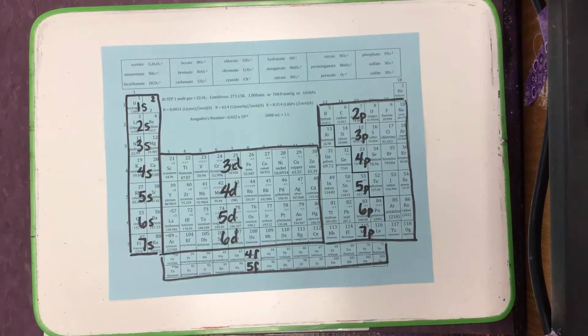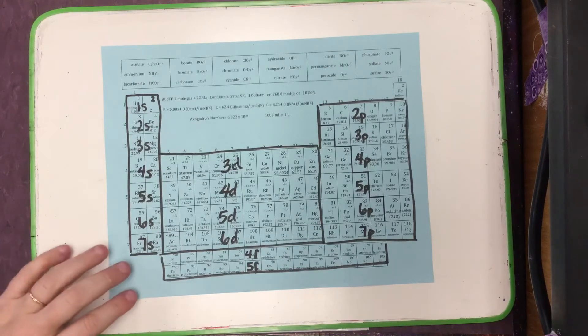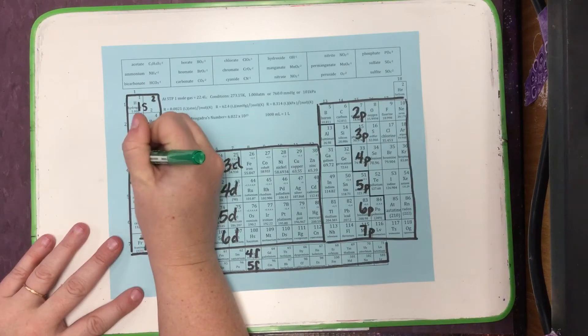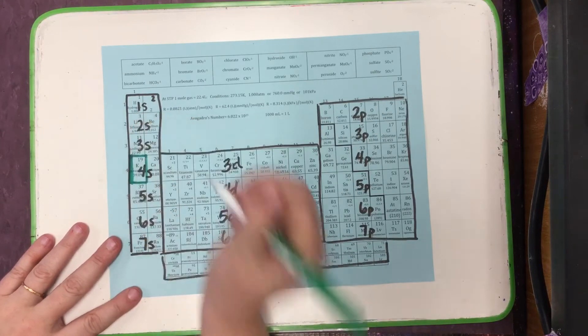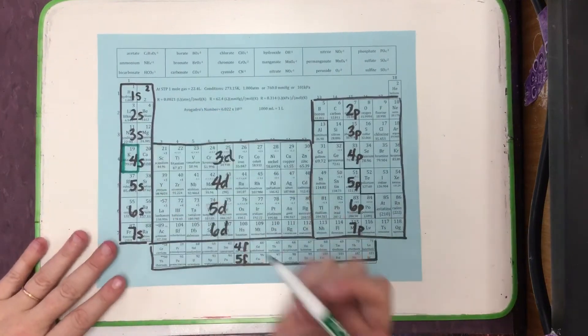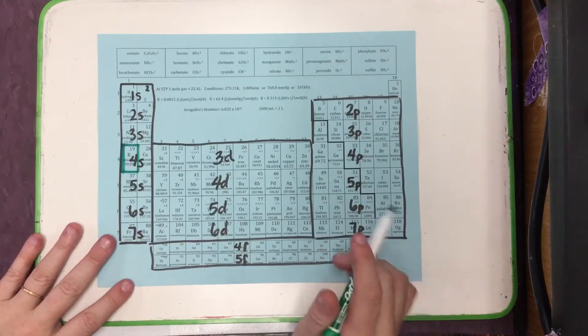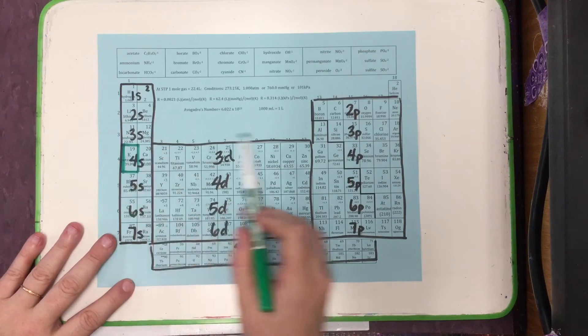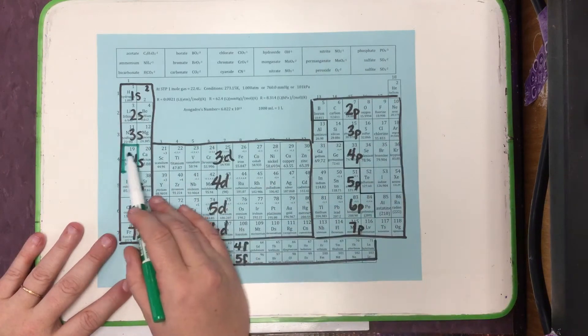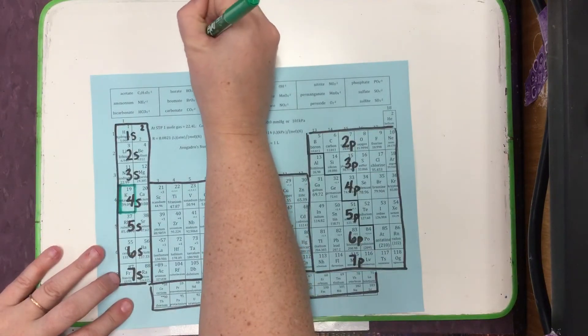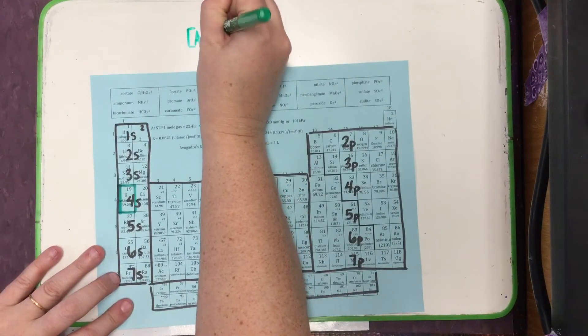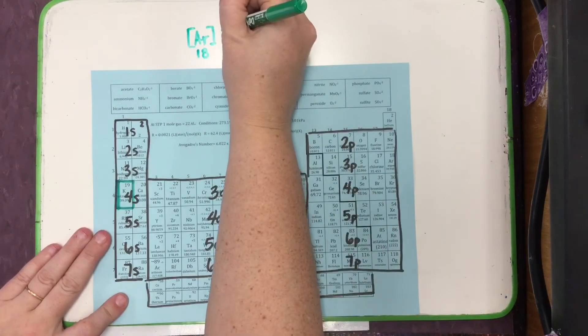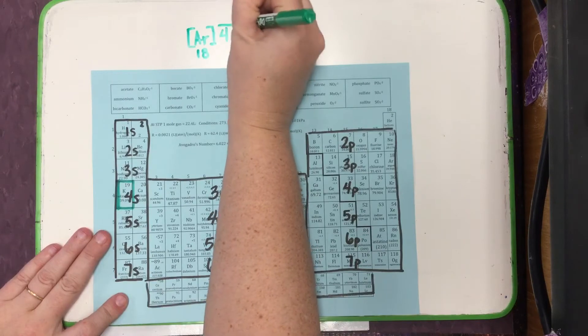We then can pick an element. The first element that I'm going to look at today is down here, this is potassium. Let's focus on the shorthand versions of our orbital notations and electron configurations that we started with yesterday. If I want to draw the shorthand orbital notation for potassium, I'm going to start with the noble gas that comes before 19, so that would be 18, that's argon.